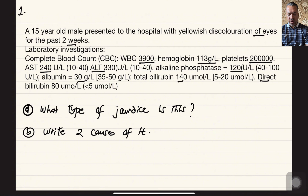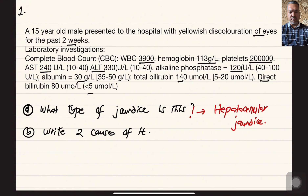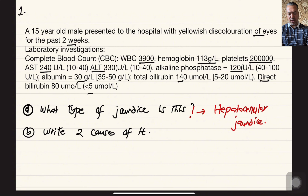If this type of case is provided, you need to identify the interpretation. This is hepatocellular jaundice, also called hepatic jaundice. According to classification, jaundice is of three types: pre-hepatic (hemolytic), hepatocellular (hepatic), and post-hepatic (obstructive). This is a clear-cut case of hepatocellular jaundice because AST and ALT are both high, ALP is marginally high, and both direct and indirect bilirubin components are elevated.